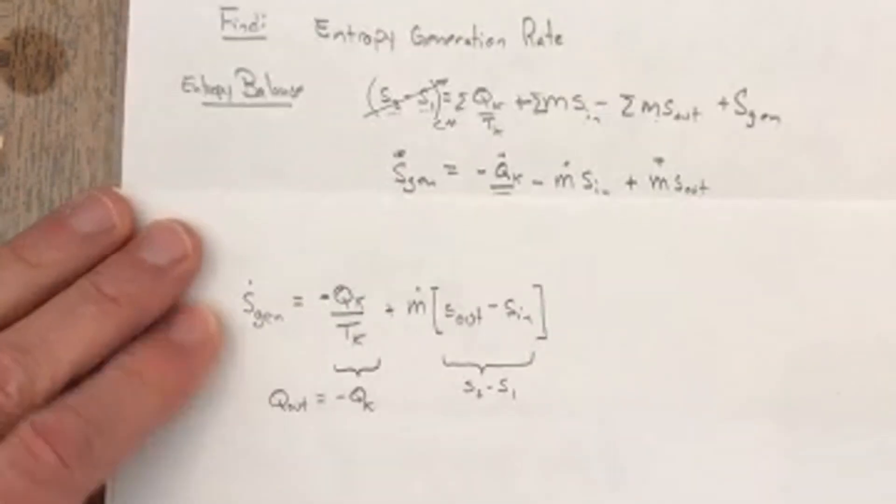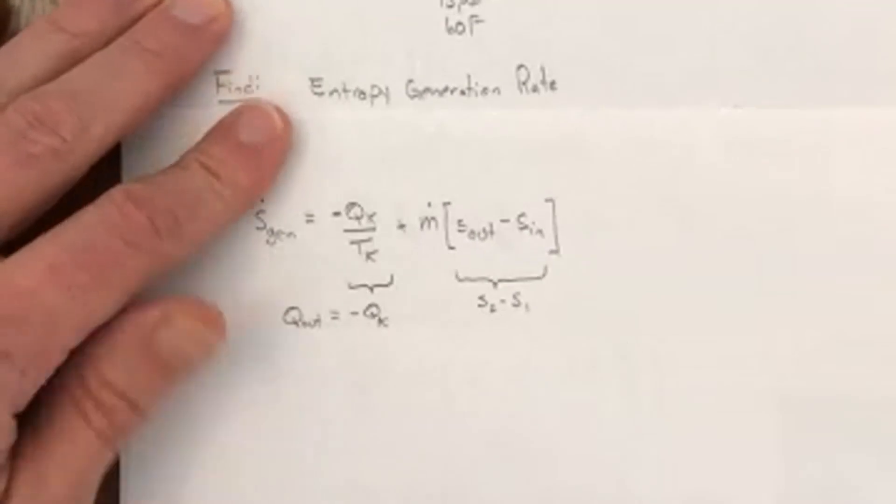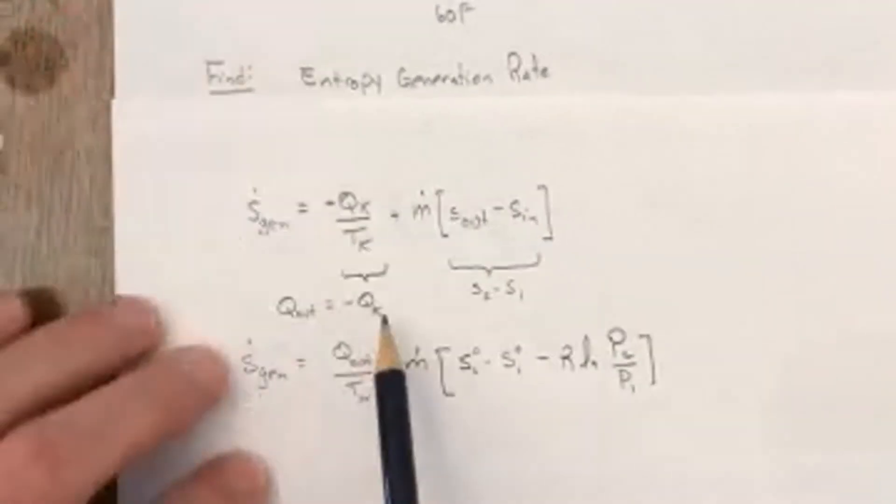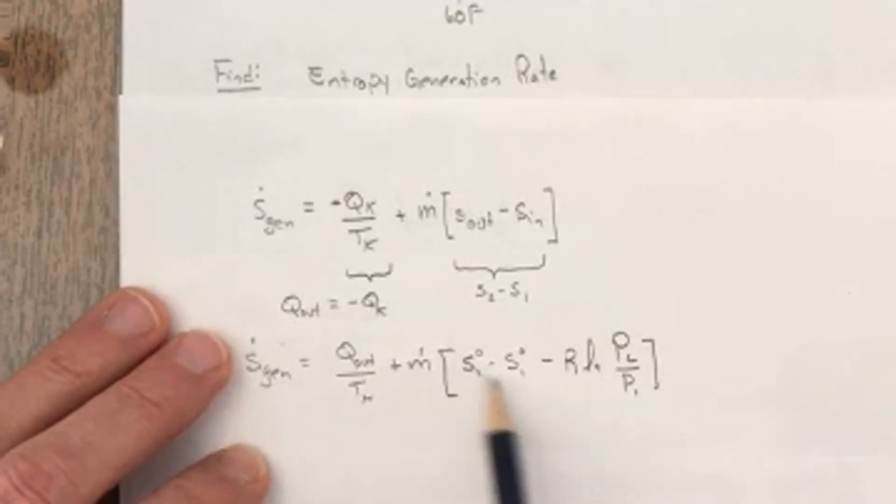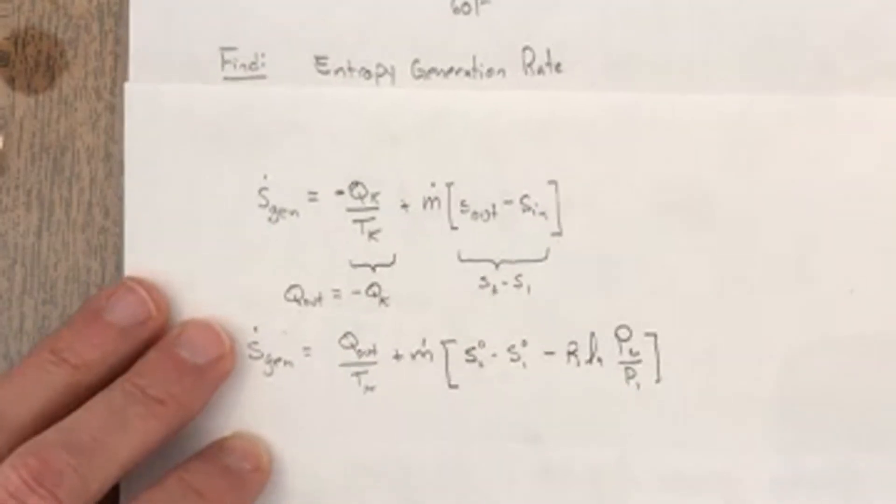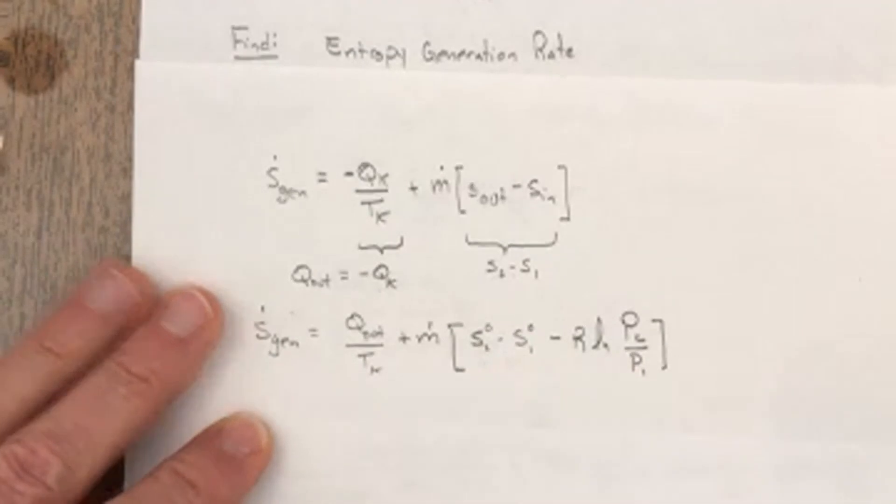Okay, so I'm going to change the sign here to be positive Q out for the heat transfer, and then I'm going to write my S2 minus S1, which is really this out minus in, and since I'm using the variable specific heat, the form looks like this.